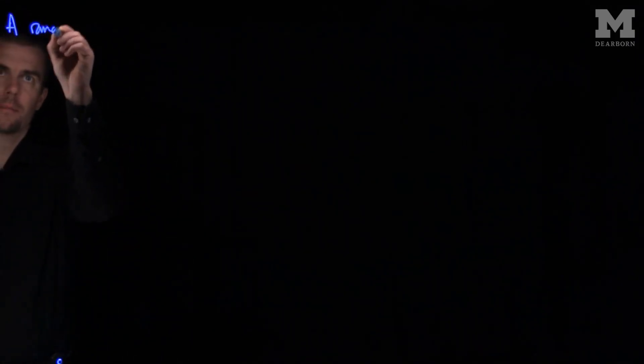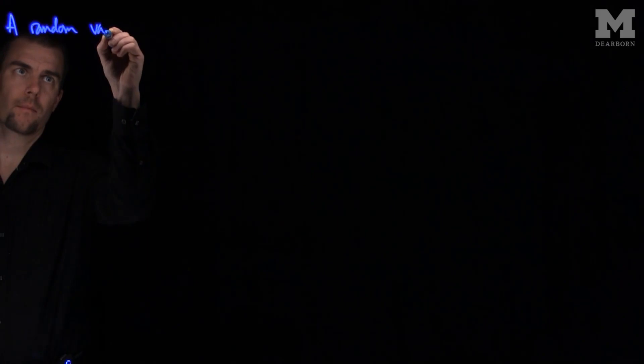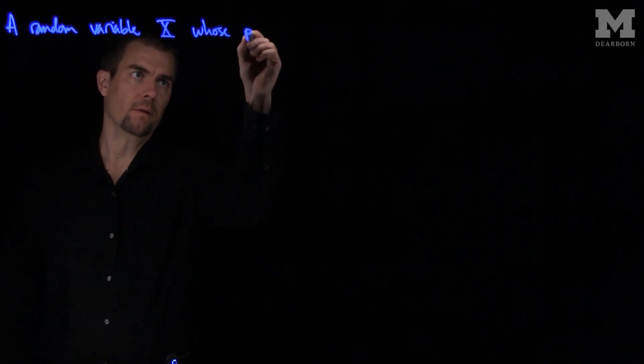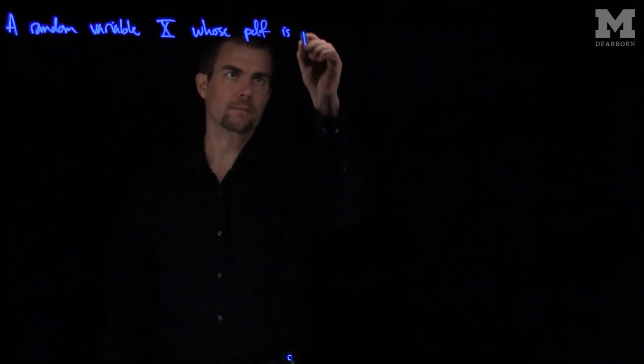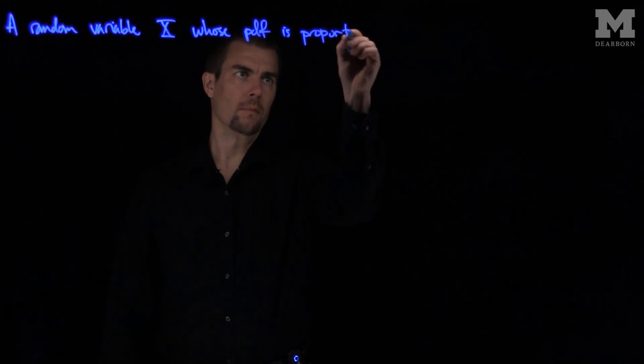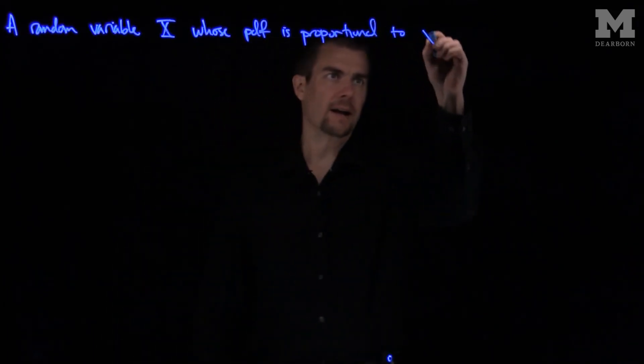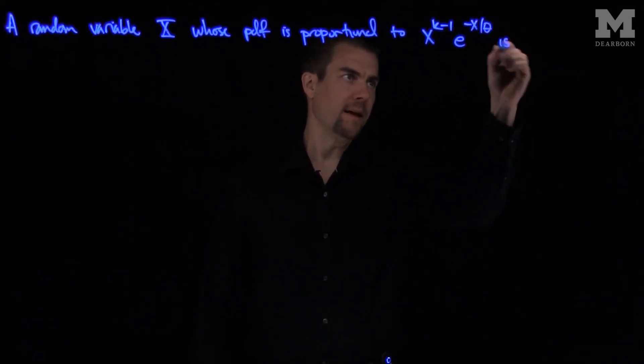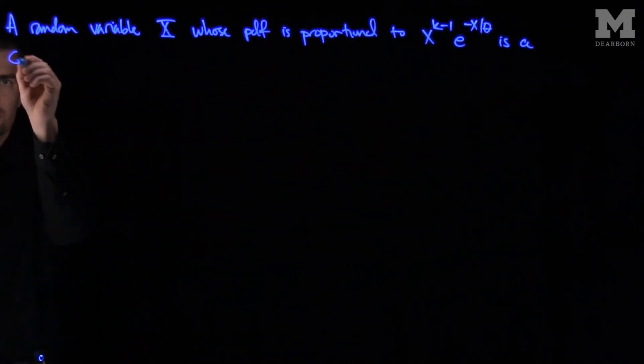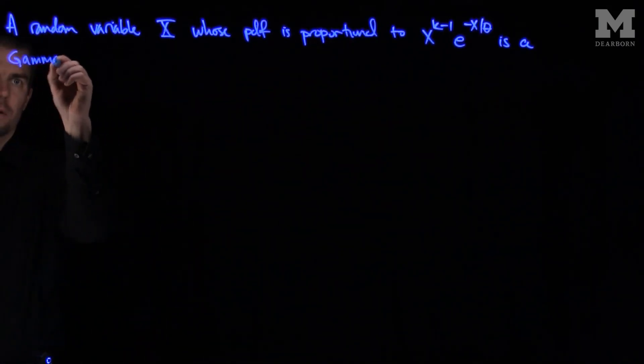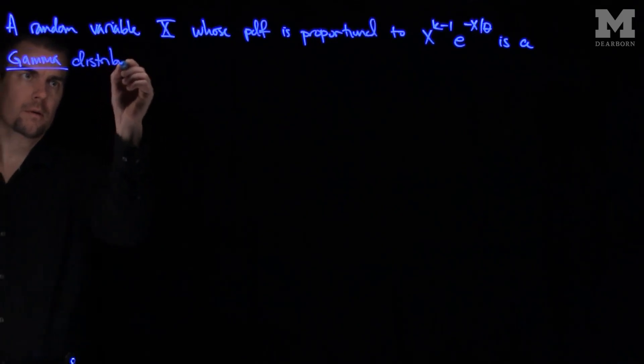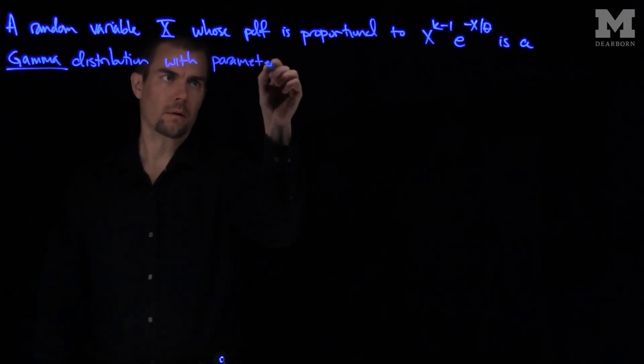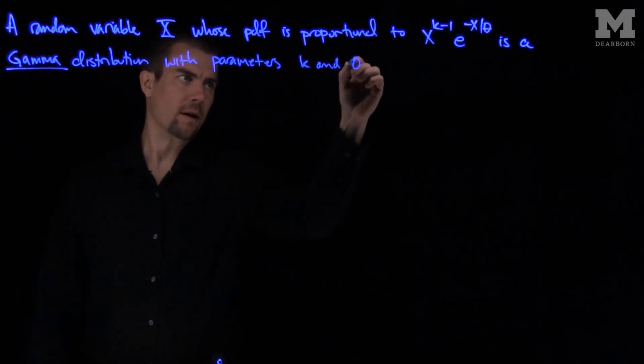A random variable X whose PDF is proportional to x to the power k minus 1, e to the negative x over theta, is a gamma distribution with parameters k and theta.